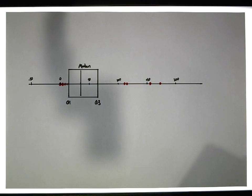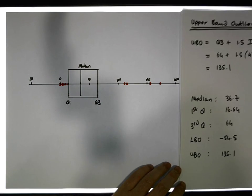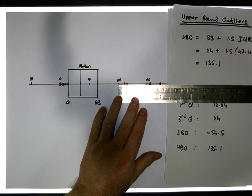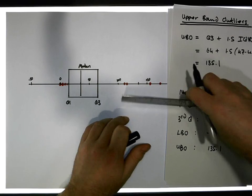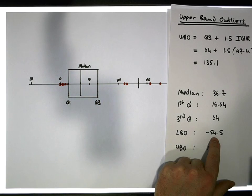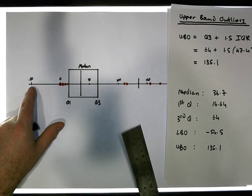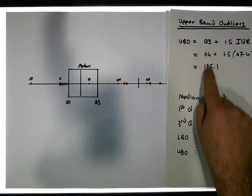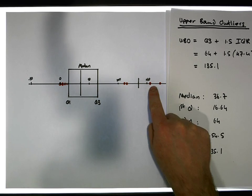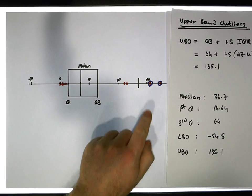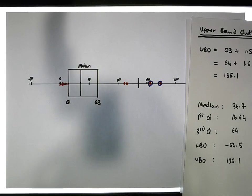Now I'm going to take the upper bound value, which is 125, and place that on the graph. What we know is that any observations greater than 135 are classified as possible unusually large values — so these two particular values here are being classified as upper bound outliers. This is our upper bound outlier position, or UBO.